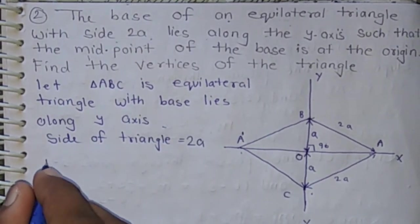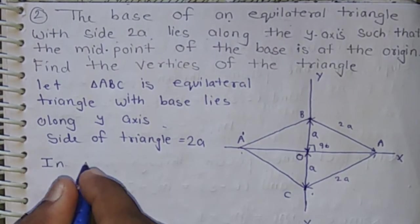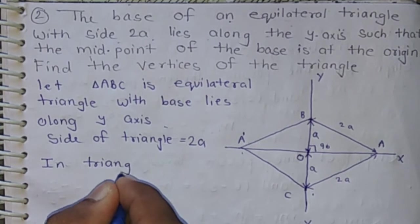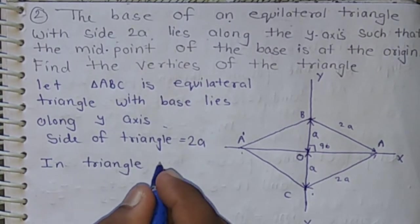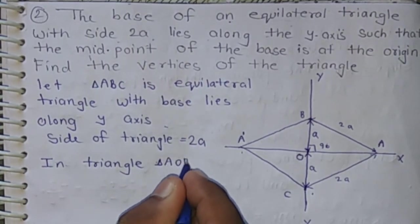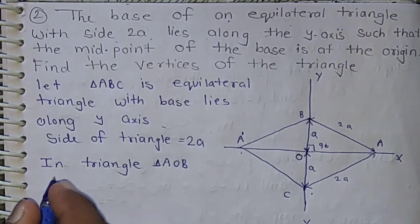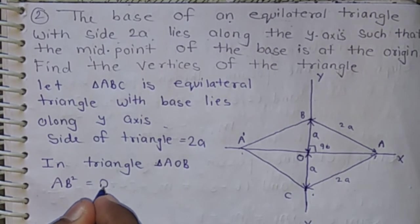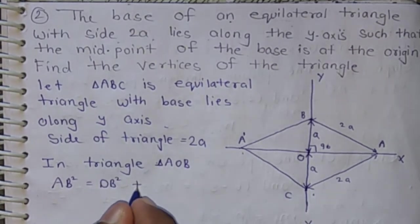Now, in triangle AOB, we have by Pythagorean theorem, AB square is OB square plus AO square.